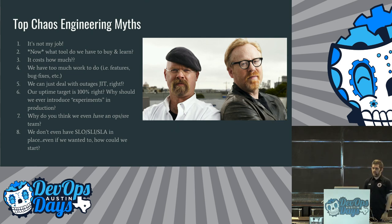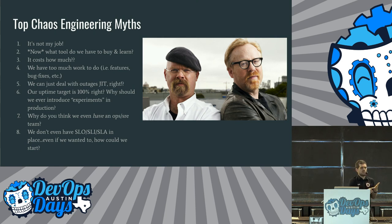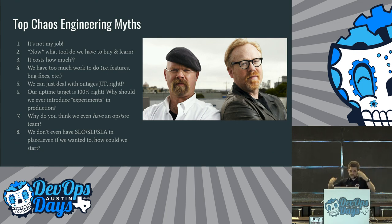Next myth: 'what tool do we have to learn and buy?' Chaos engineering is not necessarily a tool — it's more of a mindset and a process of learning and maturing. You don't necessarily have to buy something right away. You may choose to invest in tooling to advance your chaos engineering maturity faster, but you don't have to. Third myth: 'it costs how much?' — 'I don't want to pay for time of engineers not doing feature work, we need more features.' How much does an outage cost? That's where you combat that and have a conversation. Number four: 'we have too much work to do, we have features and bug fixes.' How much more work can we do if we weren't interrupted by outages and constant context switching?